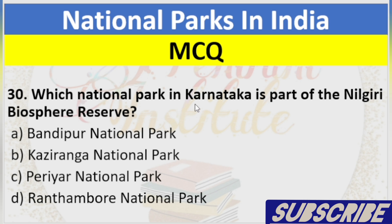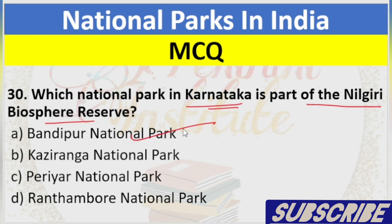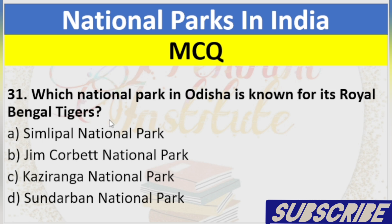Question 30: Which National Park in Karnataka is part of the Nilgiri Biosphere Reserve? A. Bandipur National Park, B. Kaziranga National Park, C. Periyar National Park, D. Ranthambore National Park. Answer: A. Bandipur National Park.